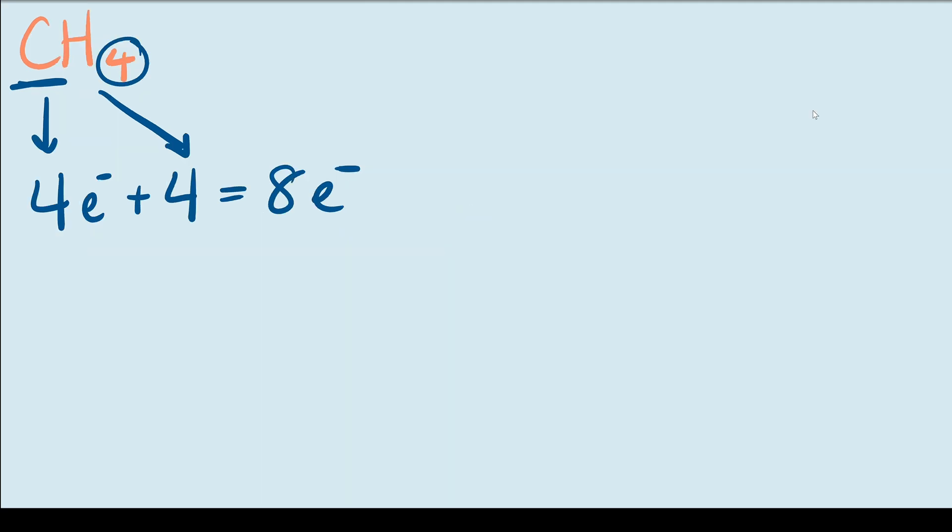Adding these up gives us eight valence electrons that we need to use up in our molecule. Next we'll draw the outline of the molecule. We'll put the carbon atom in the middle since hydrogens can never be the central atom. We'll surround the central carbon atom with four hydrogen atoms and connect them using single bonds.